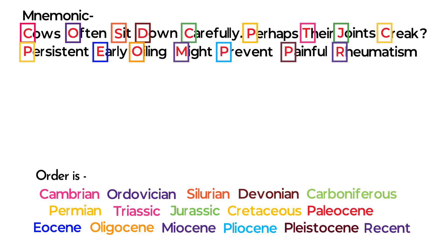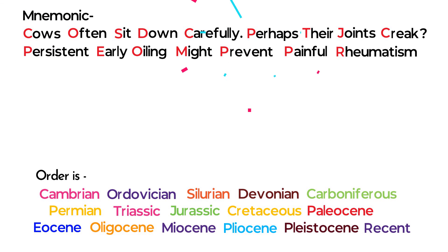So, this is the order of geological time periods and the mnemonic is: Cows often sit down carefully, perhaps their joints creak, persistent early oiling might prevent painful rheumatism.